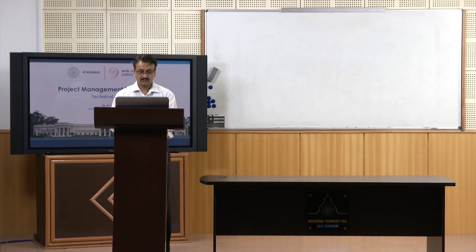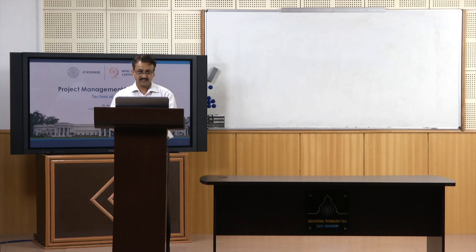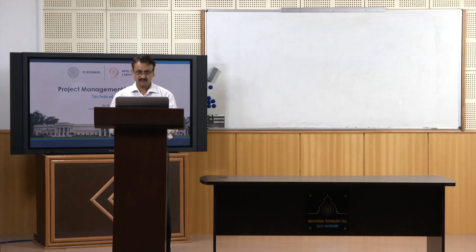Principal inputs would decide what kind of technology you would like to choose. For example, if you are making cement, you can go for dry or wet process and use appropriate technology accordingly. The quality of limestone in a cement plant will determine what kind of technology you use. Technology A requires input material A, and technology B requires input material B — there has to be a one-to-one match between principal inputs and the technology you choose.